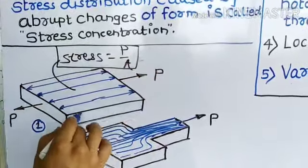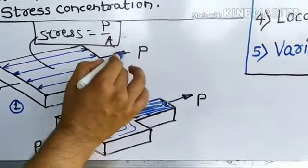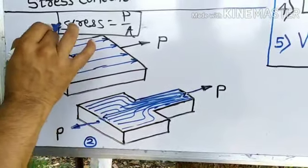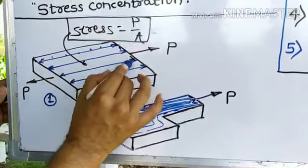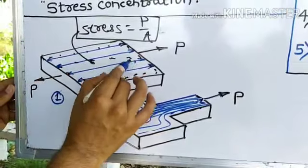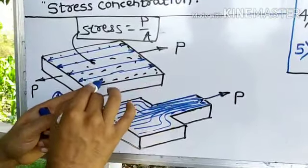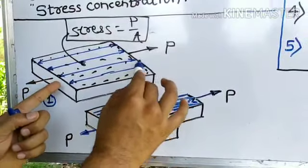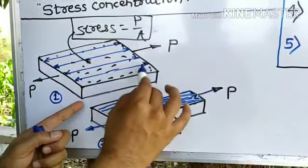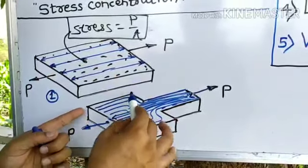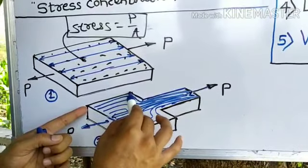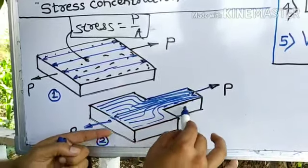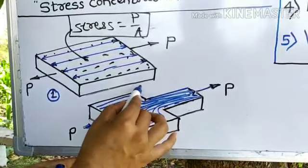In this section, consider a regular component — one plate — where load is going to be applied. Due to this loading, stresses are distributed all over the section of the plate, and the magnitude of stress will be the same all over the section because it is a continuous section. Now, when stress concentration occurs, a simple component changes its shape suddenly or abruptly. Suppose I have to cut a portion of the plate — here it is going to change its shape suddenly, changing its size and shape.